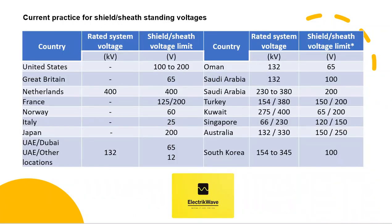Country-wise current practice for shield or sheath standing voltages: the maximum sheath voltage value ranges from 25 volts to 250 volts under normal operating conditions. Values of sheath voltages during emergency operating conditions vary by country and are in the range of 275 volts to 600 volts.